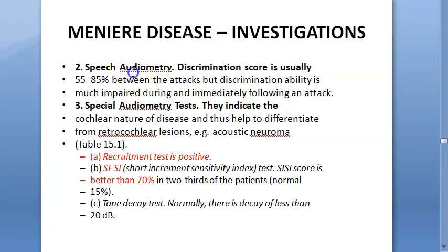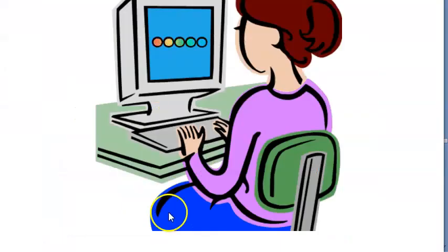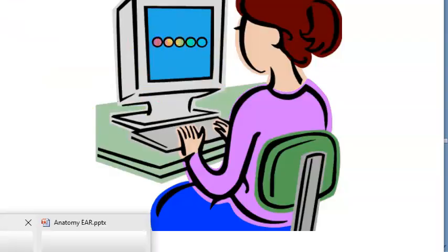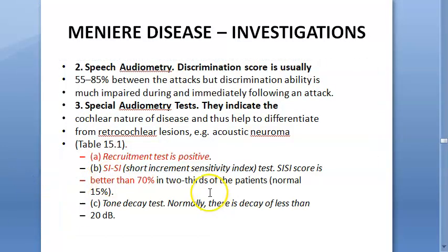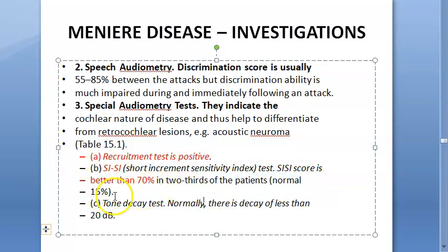Special audiometry tests include recruitment testing, which is positive. The SISI (short increment sensitivity index) score is better than 70% in two-thirds of patients. Normally SISI is only about 15%, so greater than 70% is significant. The SISI test works by presenting one-decibel incremental clicks at 20 dB above the patient's hearing threshold and observing how many clicks the patient can identify.